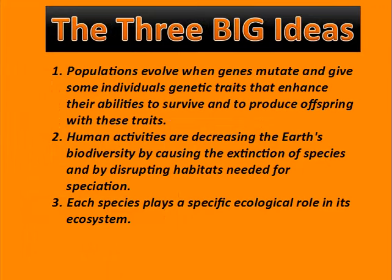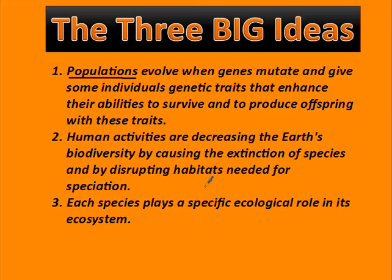Looking at the three big ideas for this chapter: first, populations evolve when genes mutate — it's populations, not individuals, that evolve. Some individuals have genetic traits that enhance their ability to survive and can pass those traits to future offspring. Second, human activities are decreasing Earth's biodiversity by causing extinction of species and disrupting habitats. Finally, every species in an ecosystem plays a specific ecological role — its niche in the ecosystem. I hope you found this helpful, and I will see you soon.